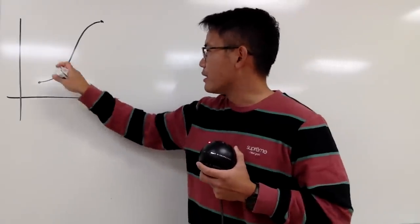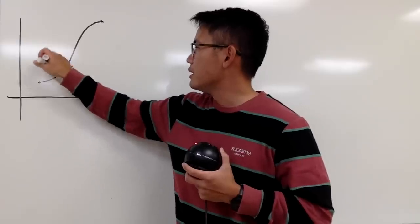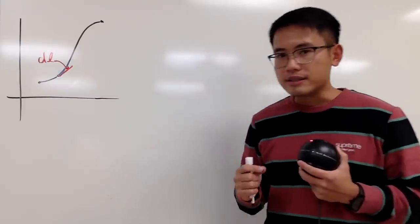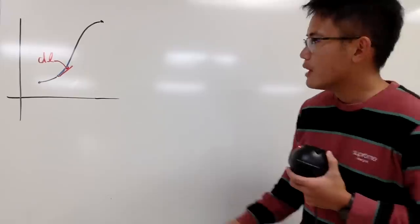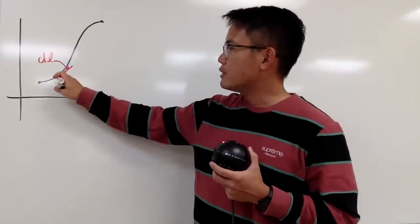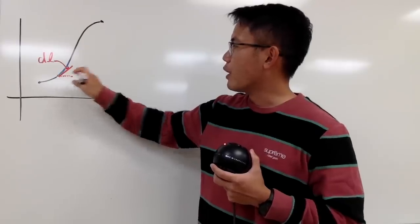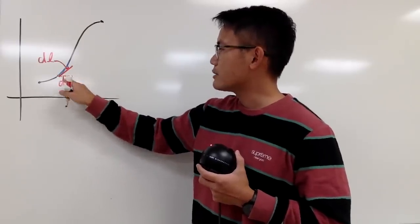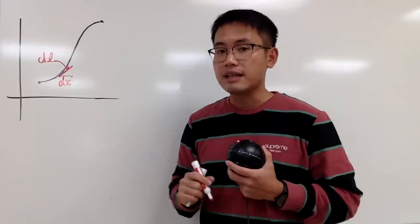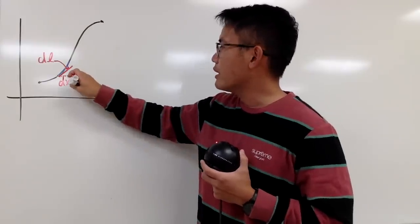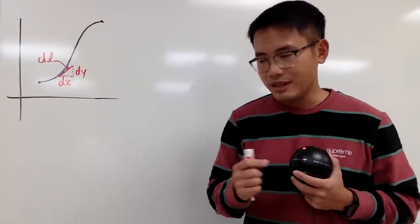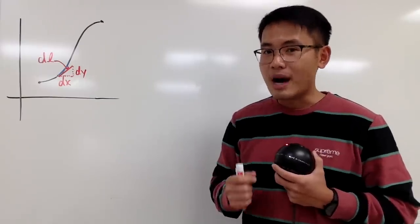For this right here, I will call it to be dL. Well, some books call it to be d little s. Well, it doesn't really matter. Here's the deal. I will actually look at this, and I will go horizontally like that, because this right here is the small change amount in the x values, that's dx. And then I will go here, and then up, and that will be dy, a small change in the y values. Why do we need dx and dy?